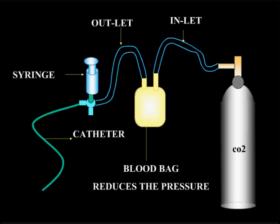This is the simple device we developed. There is a carbon dioxide cylinder connected to a blood bag which acts as a reservoir. From the blood bag there is an outlet tube connected to a 3-way, and the 3-way is connected to a diagnostic catheter. We aspirate through the 3-way, then turn it around and inject into the catheter to perform the angiograms.